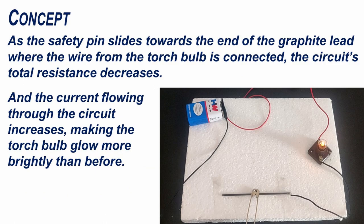As the safety pin slides towards the end of the graphite lead where the wire from the torch bulb is connected, the circuit's total resistance decreases and the current flowing through the circuit increases making the torch bulb glow more brightly than before.